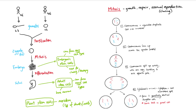Another key thing to remember is what stem cells are — cells that can differentiate into specific cell types. We have embryonic stem cells and adult stem cells with some differences between them. In plants, stem cells are found in the meristem and retain the ability to differentiate at any point in their life. That is cell division.